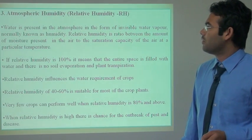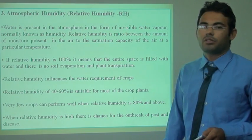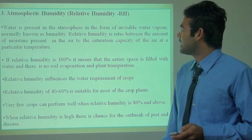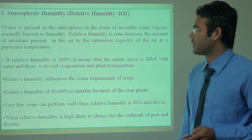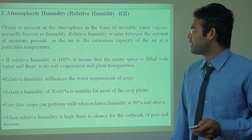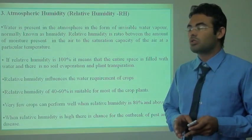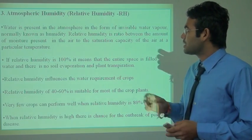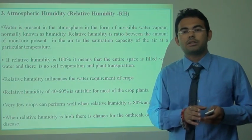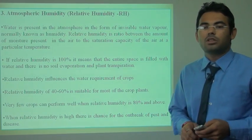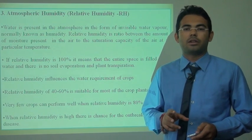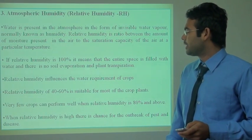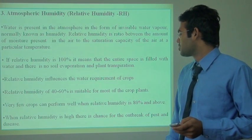The third climatic factor is atmospheric humidity. Water present in the atmosphere in the form of invisible water vapor is normally known as humidity. Relative humidity is the ratio between the amount of moisture present in the air and the saturation capacity of the air at a particular temperature. If relative humidity is 100%, evaporation and plant transpiration do not occur. Transpiration means water is removed from the plant through the stomata. Relative humidity of 40 to 60% is suitable for most crop plants.